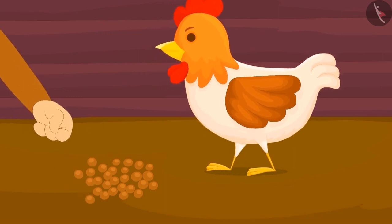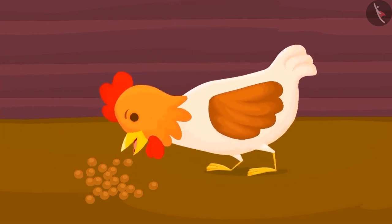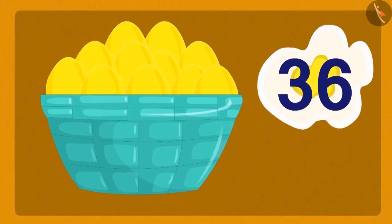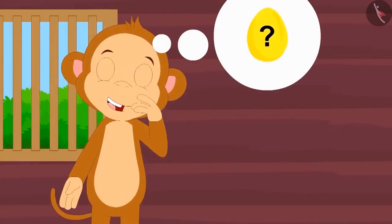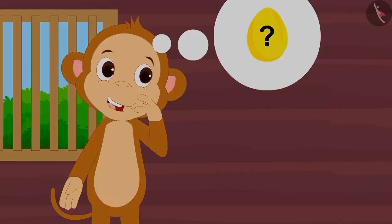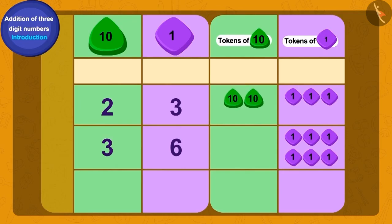Babban fed the hen daily for a week and in a week the hen laid another 36 eggs. Babban is thinking, how many gold eggs he has now? Let us help him. To find the total number of gold eggs, we will add 36 to 23.